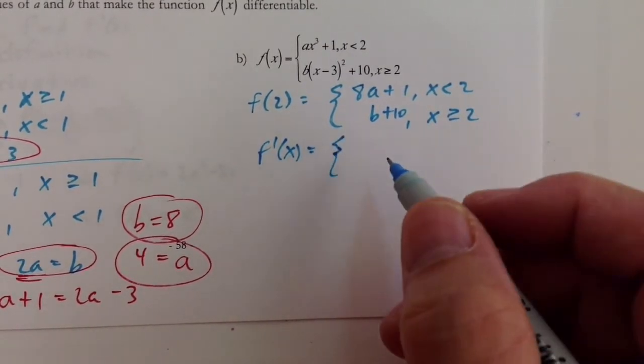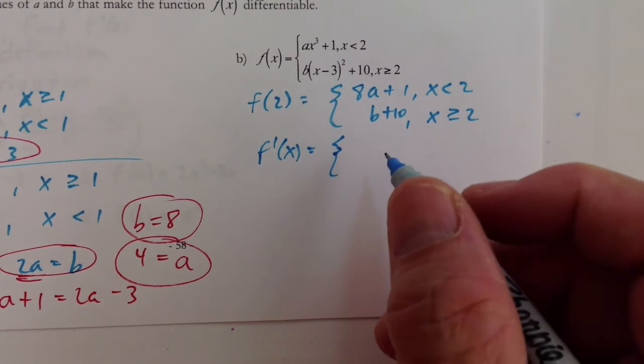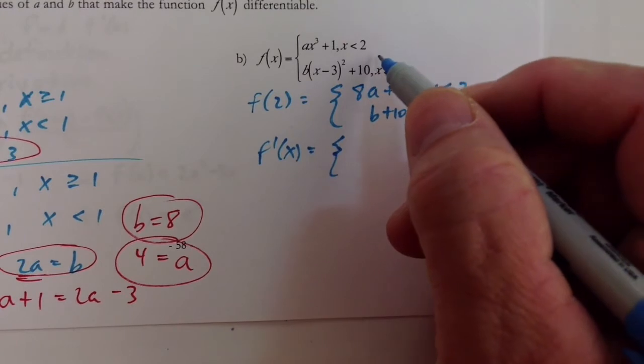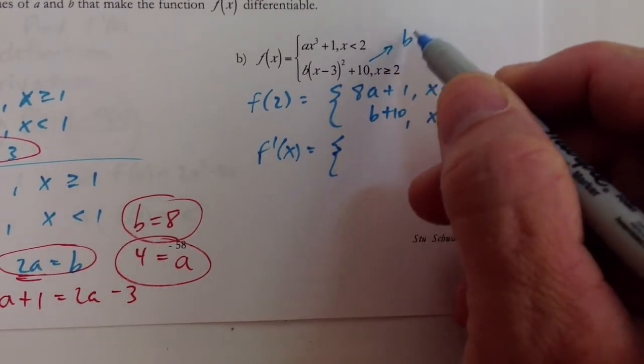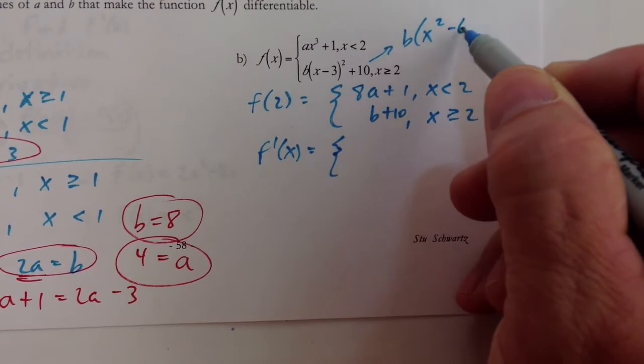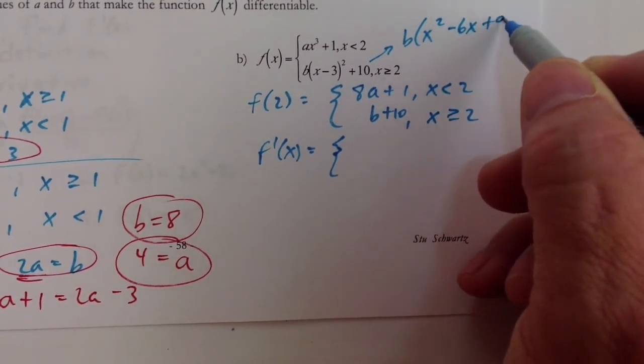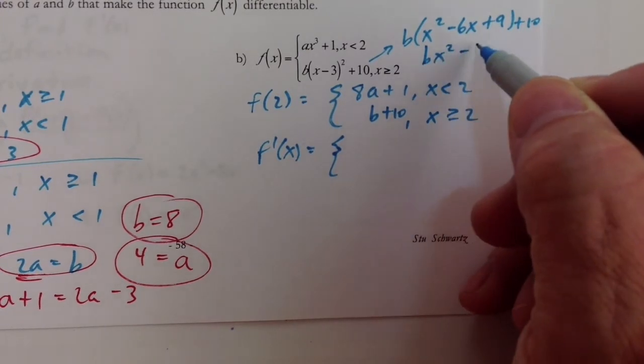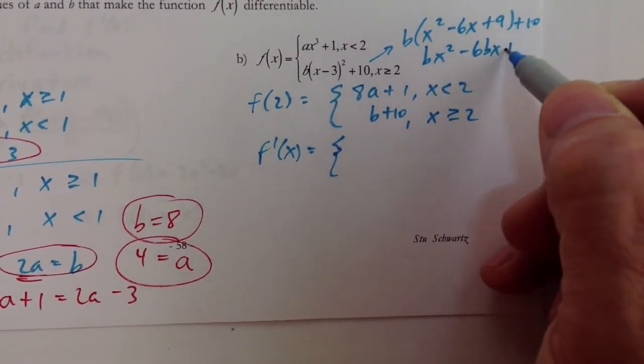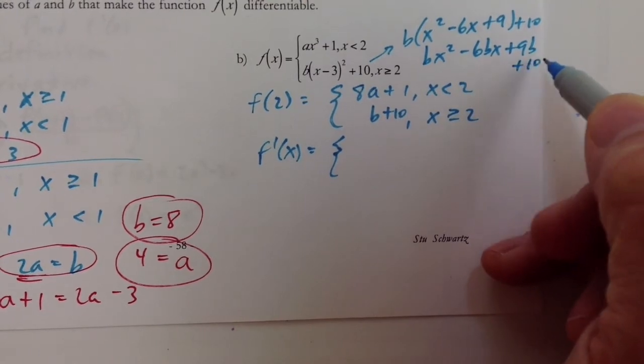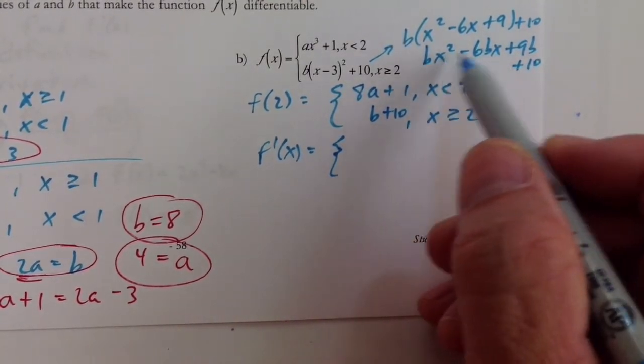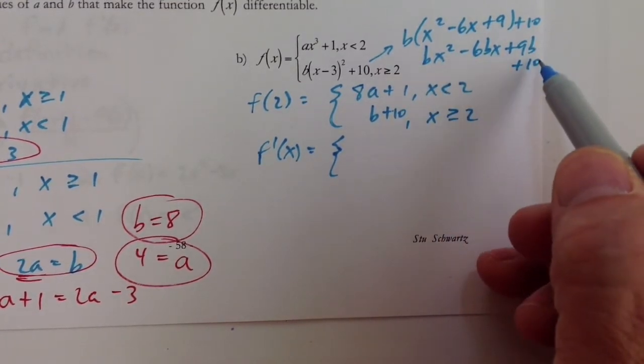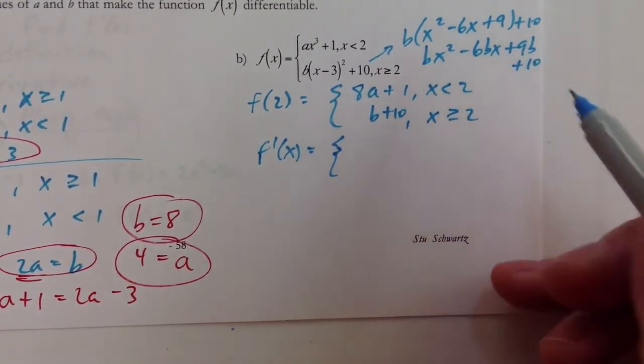Let's find the derivative. Oh, that's going to be a hard derivative for you guys because you don't know how to do that part yet. So we're going to have to multiply that out. B times x squared minus 6x plus 9 plus 10. So we have bx squared minus 6bx plus 9b plus 10. Well, the good thing is that the only two terms that we need to worry about in our derivative are the first two that contain an x. The other ones are constants, and so the derivatives of those two terms are 0.